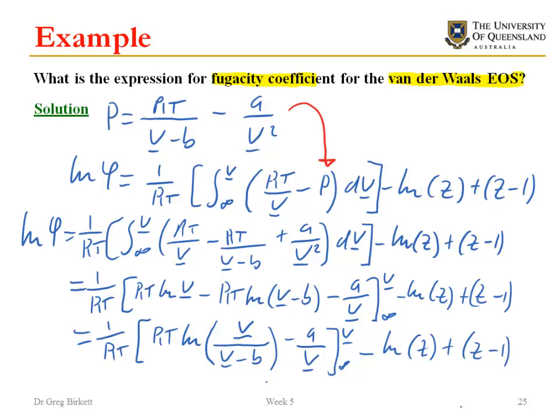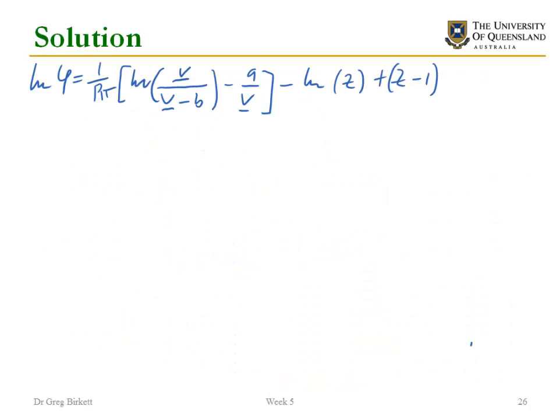Now we have to look at what happens at our integrating bound. We're integrating between volume equals infinity and volume equals V. Now at infinity, because this is very large and this is very large, this whole term here tends to 1 and then the log of 1 of course is 0. Over here A divided by V, if V is infinite then this term is 0 as well.